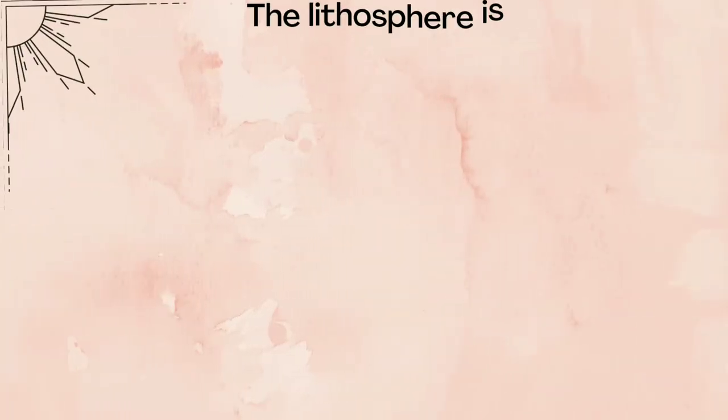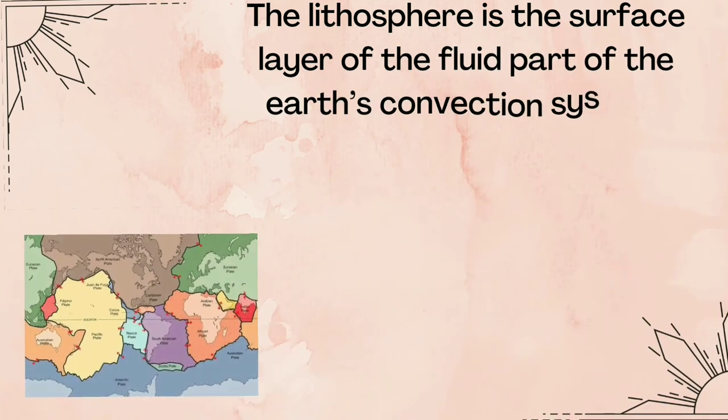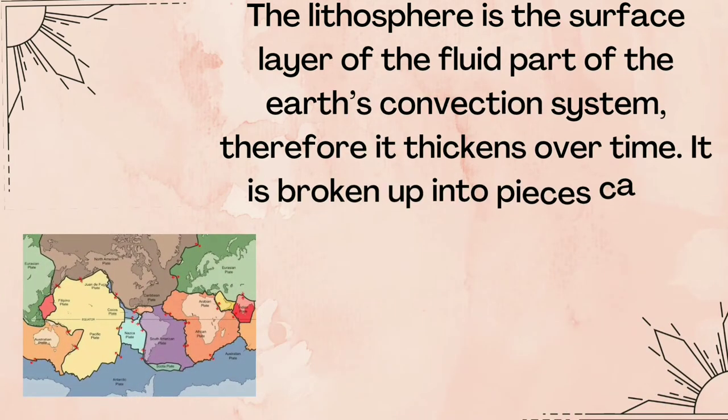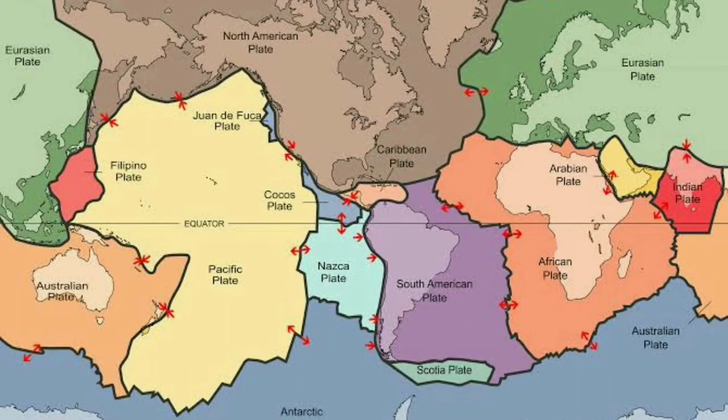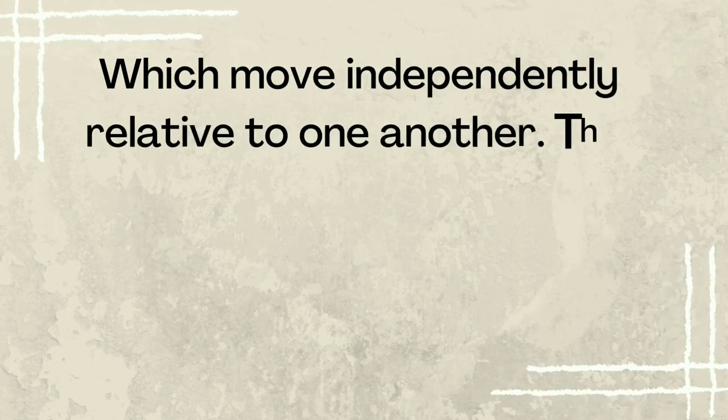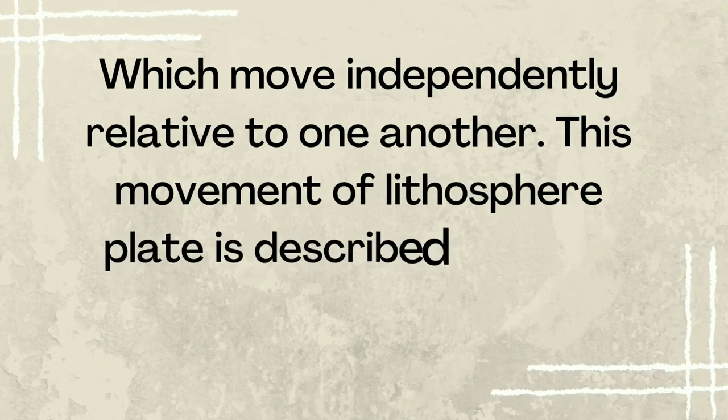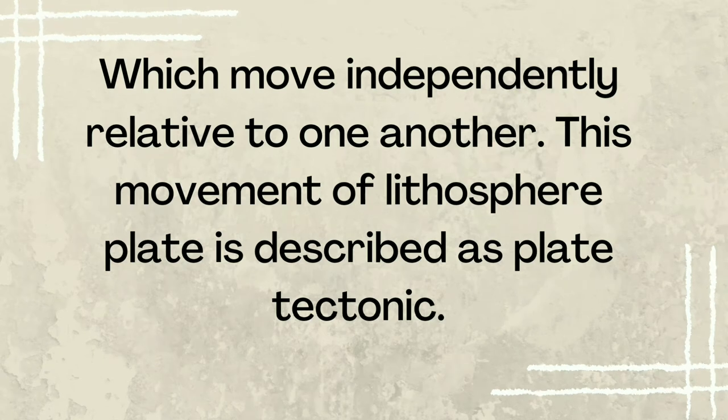The lithosphere is the surface layer of the fluid parts of the Earth's convection system. Therefore, it thickens over time. It is broken up into pieces called plates, which move independently relative to one another. This movement of lithosphere plates is described as plate tectonics.